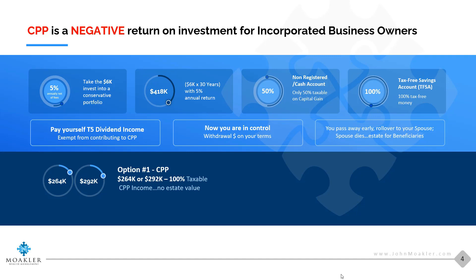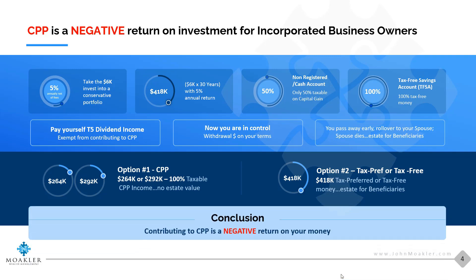So again — would you prefer option number one, where you pay yourself a T4 salary, contribute to the Canada Pension Plan, and receive $264,000 to $292,000 in retirement, 100% taxable on your personal tax return with no estate value upon your passing? Or would you prefer option number two, where you pay yourself a T5 dividend and have $418,000 of tax-preferred or tax-free money in retirement, with an estate for your beneficiaries? The conclusion is that contributing to CPP is a negative return on your money.